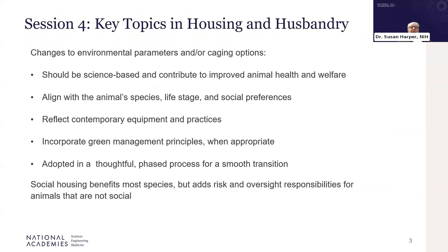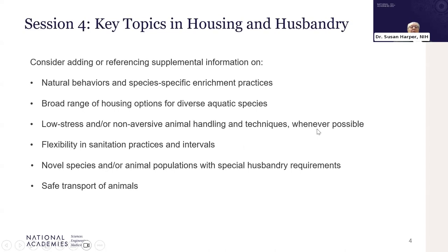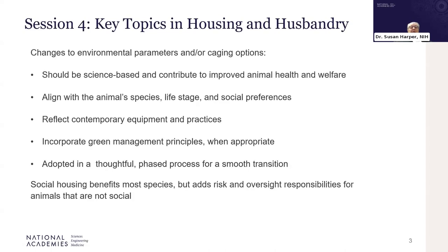The top three areas that received the most attention emphasized general housing and management practices, the welfare and well-being of animals, and social housing. Most participants understood the value of more precisely defined engineering standards, but there's a growing interest to allow programs to have some flexibility to develop performance-based animal housing and care options best aligned with their own institution's research needs. Broad requirements for social housing are not practical, and in some cases not in line with the welfare of certain species or individual animals that are not highly social.